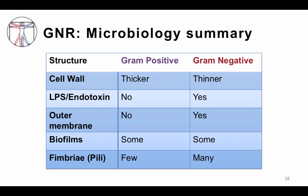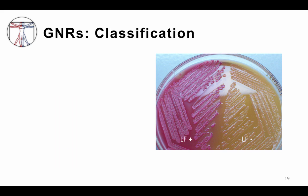Here's a quick reminder of some important differences between gram-positive versus gram-negative cell walls. Gram-positives tend to have a thicker cell wall, whereas gram-negatives have a thinner cell wall. LPS, or endotoxin, which is a potent stimulator of the immune system, is common on gram-negatives but does not appear on gram-positives. Gram-negatives have an outer membrane while gram-positives do not. Both gram-positive and gram-negative bacteria can have biofilms. And gram-negatives have many pili or fimbriae, as opposed to gram-positives, which tend to have few pili or fimbriae.